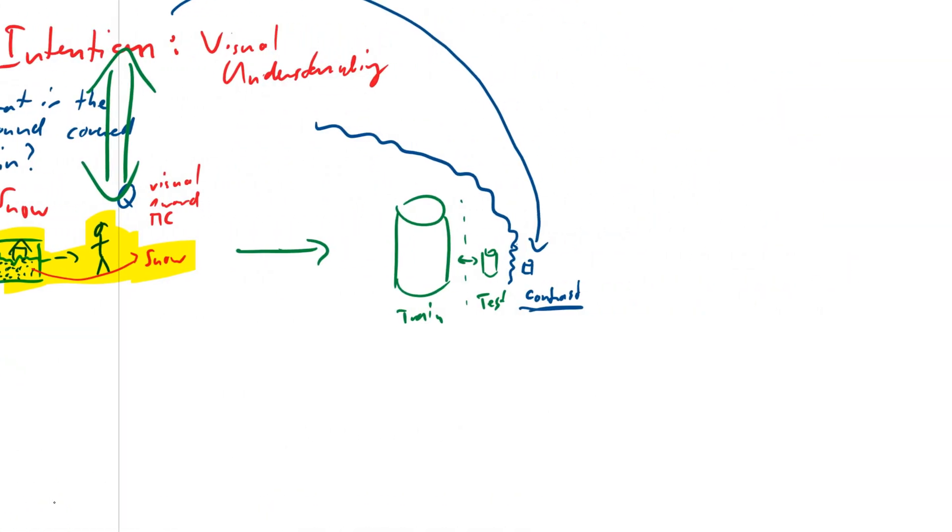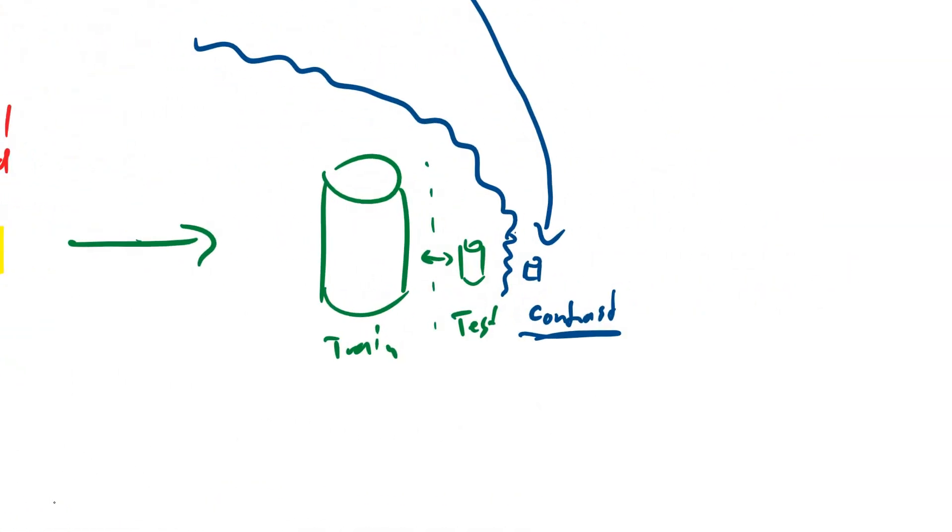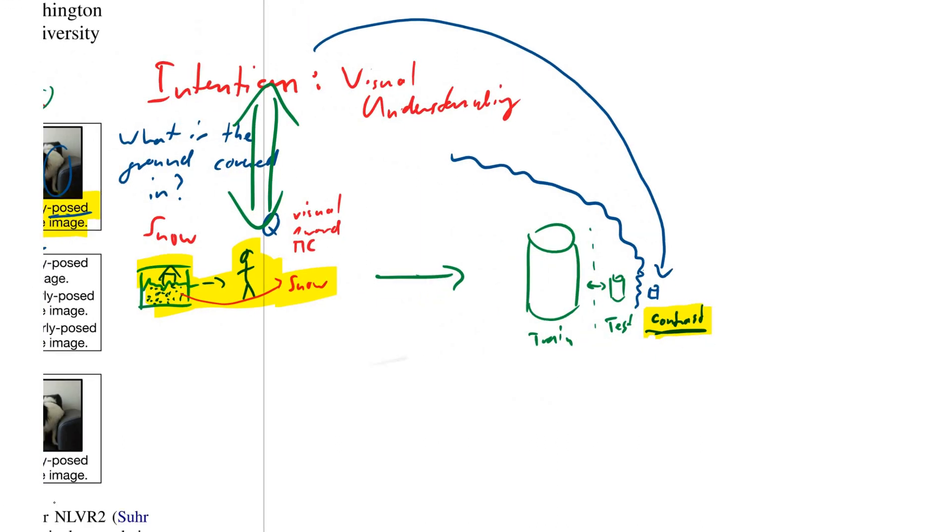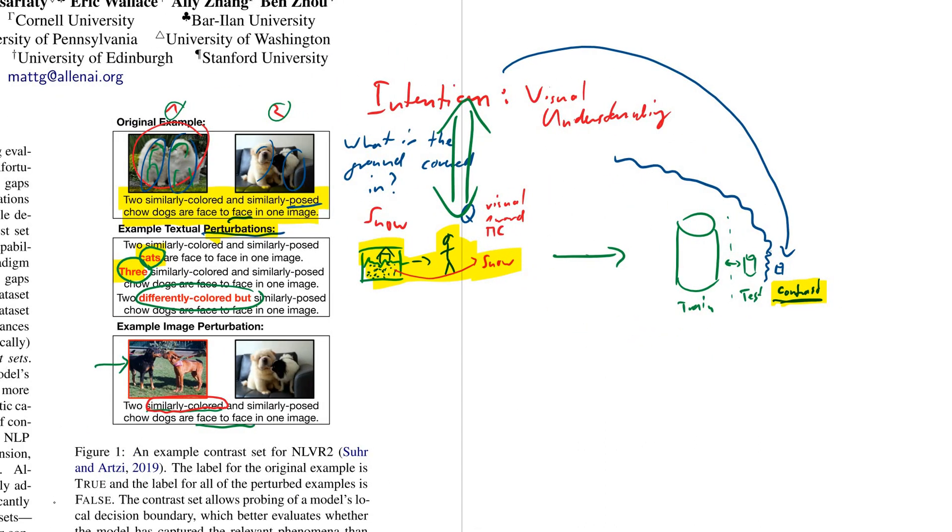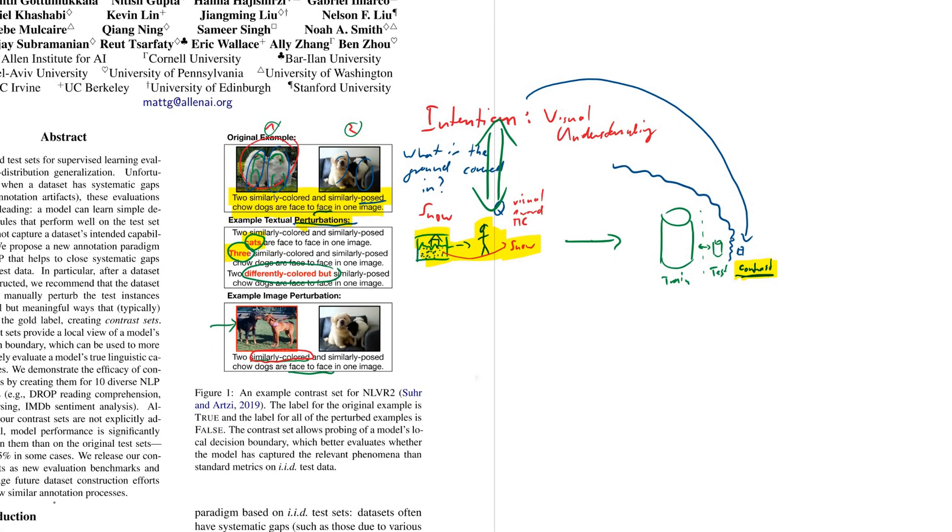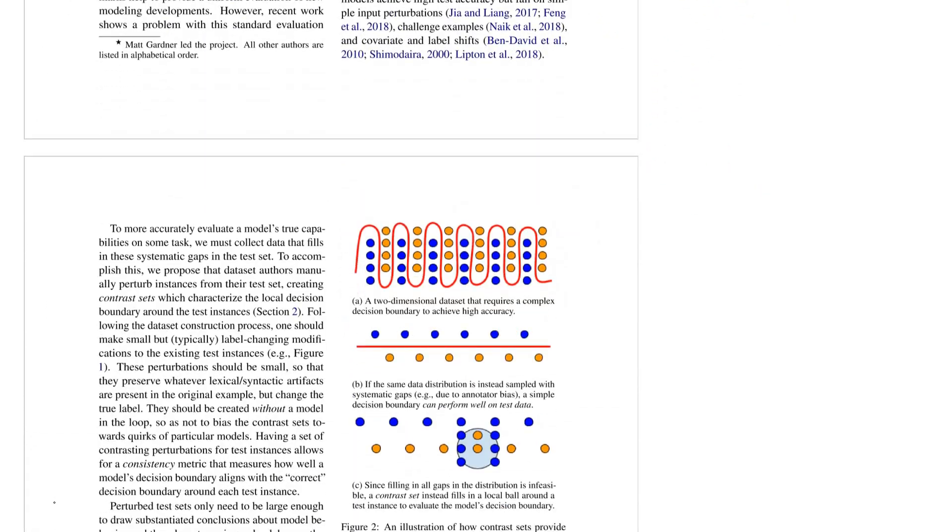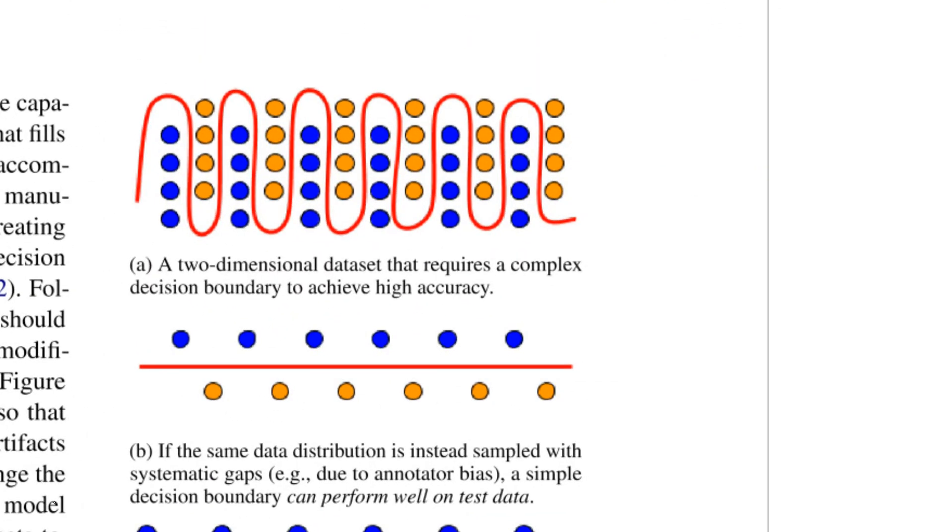And the authors they propose a new metric to track this. But essentially the authors propose how well models do on these contrast sets will be a reflection. It should be an additional thing that people do with their NLP models. So you get the picture. Here that is I believe the entire gist of this paper. And I have some problems. First of all here they say, let's give a toy example in two dimensions.